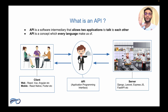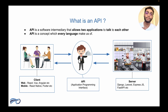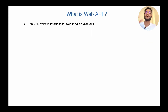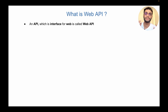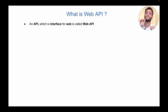This is all the processing that happens in the background. Now that you have a fair understanding of what is an API, let's understand what is a web API. A web API is simply an API which is an interface for the web. Whenever you use an API which is an interface for the web, it is called a web API.